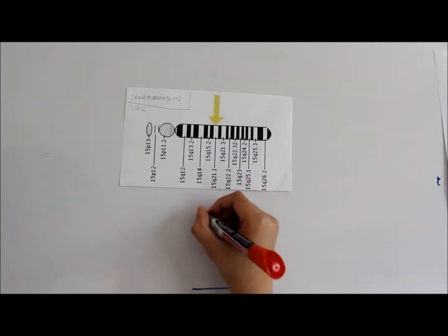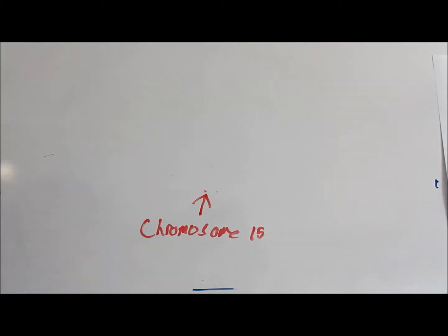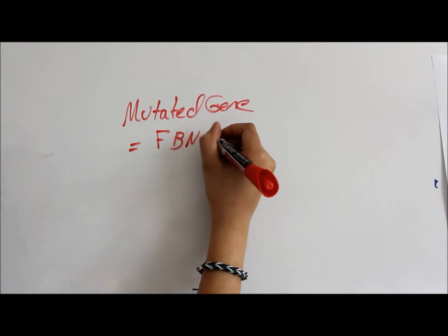The doctor showed Abe's family this picture. He told him that the syndrome occurs on chromosome 15 and the exact location of the affected gene is 15q21.1. He said that the gene that was mutated was called FBN1.